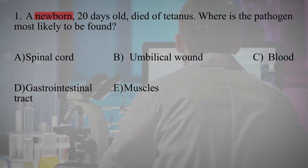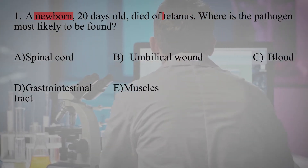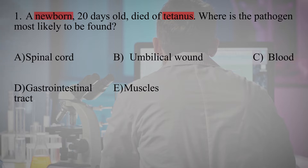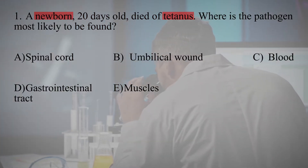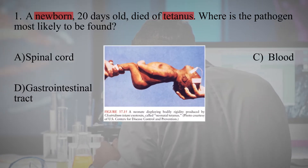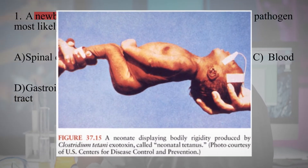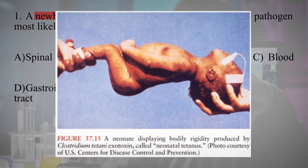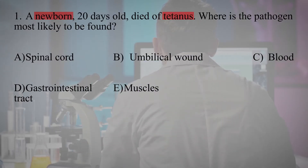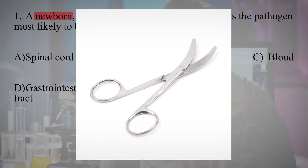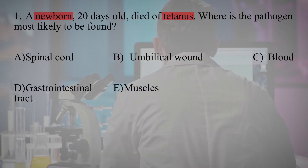A newborn, 20 days old, died of tetanus. Where is the pathogen most likely to be found? The keywords in this test are newborn and tetanus — namely neonatal tetanus. A child can become infected through the umbilical wound, into which bacterial spores can enter with non-sterile medical instruments. Therefore, the correct answer is umbilical wound.